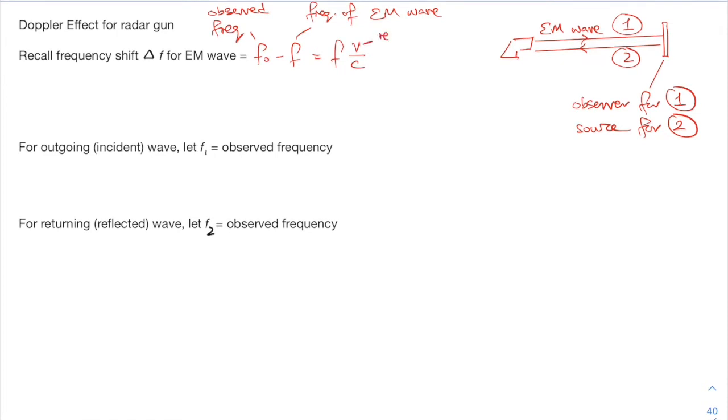Where V refers to the relative speed between the observer and the source. And C refers to the speed of the emitted EM wave.